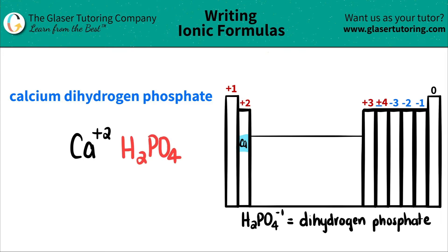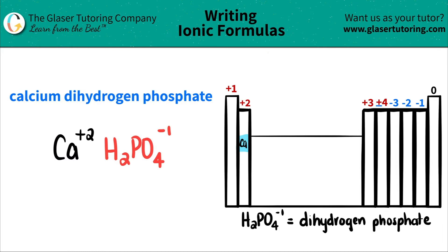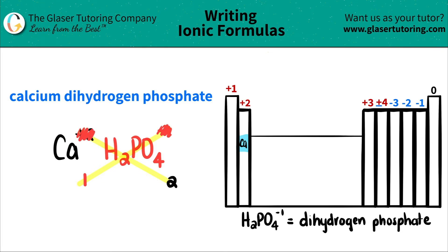And now we're ready to rock and roll. Dihydrogen phosphate has a negative one charge. What we're going to do is a cool trick where we crisscross the charges to find the subscripts for calcium and dihydrogen phosphate. This plus two crisscrosses down, telling me I need two of the dihydrogen phosphates. And this negative one crisscrosses down, telling me I need one calcium. When you do this crisscross, don't worry about the charges anymore — they vanish, and you just worry about the subscripts at the bottom.